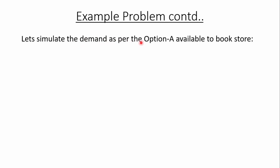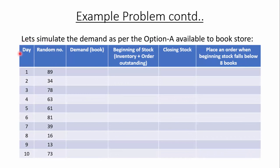Now let's simulate the demand as per Option A. In Option A, the bookstore orders 5 books per order whenever the stock at the beginning falls below 8 books. We draw a table with days 1 to 10, the random numbers given in the problem, and the demand for corresponding days calculated from the previous table. The demand for day 1 is 3 books, day 2 is 2 books, day 3 is 3 books, and so on. We also track the stock at the beginning of each day — which includes inventory from the previous day plus any order outstanding — and the closing stock at the end of each day.